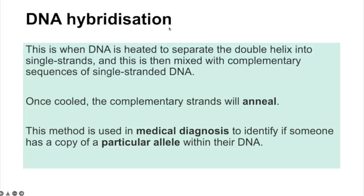DNA hybridisation is when DNA is heated to separate the double helix into single strands, then mixed with a complementary sequence of single-stranded DNA. Once cooled, the complementary strands join together — this is annealing. This method is used with DNA probes in medical diagnosis to see if someone has a particular allele known to cause a disease.